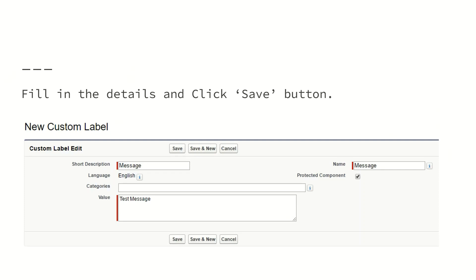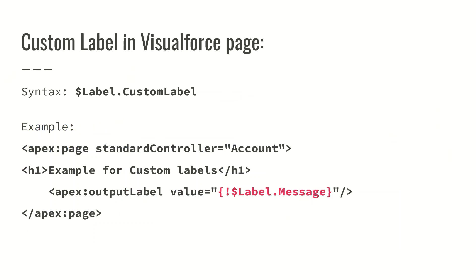Next, fill in the details and click Save. The basic details are: a short description, the name of the label, and its value. In this case the name is 'message' and the value is 'test message'. To use it in a Visualforce page, the syntax is $Label.messageName — as you can see in this Apex output panel, the value is Label.message, where 'message' is the name of that particular custom label.